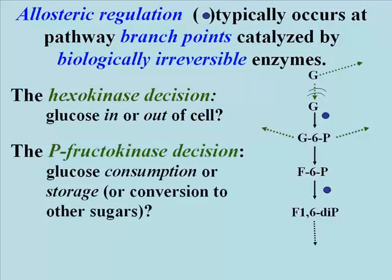The next branch point is the reaction we were just looking at, catalyzed by phosphofructokinase. Here allosteric regulation will mediate the decision to either use glucose for energy — that is, for glycolysis to proceed — or to store the glucose as glycogen, or possibly even convert it to other sugars like ribose or deoxyribose. What happens of course depends on cellular needs.